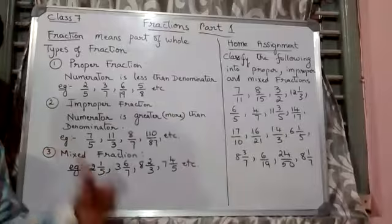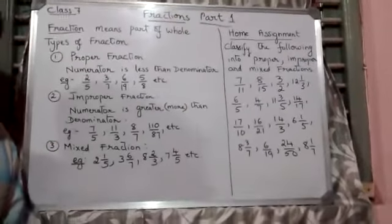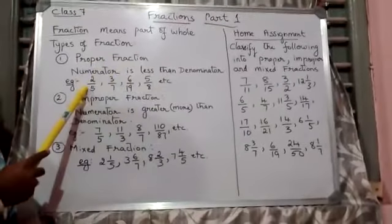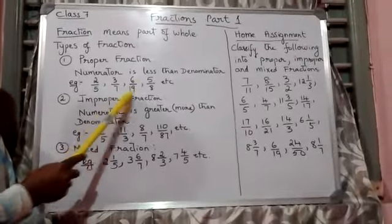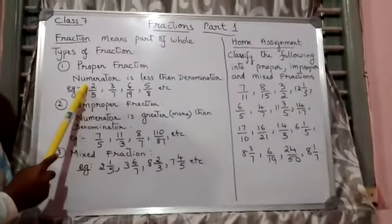If the numerator is less, denominator is more, then such a fraction is called a Proper Fraction. Examples of Proper Fractions are 2 by 5, 3 by 7, 6 by 19, 5 by 8. You can see that the numerator is less, the denominator is greater or more.